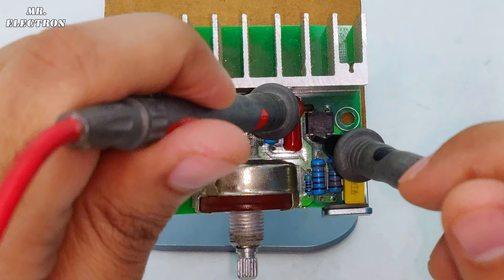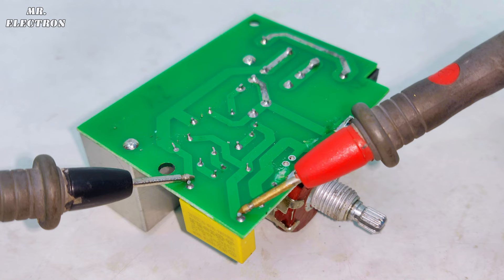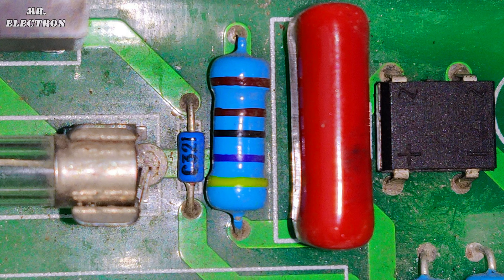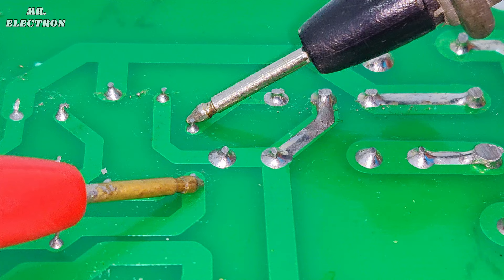Let's do the continuity check on these two capacitors now. Starting with the yellow one. It's fine. The red one. Yeah, fine. Moving on to the small component C321 and I'm not sure what it is but let's do the continuity check. There is no beep. Seems like it is fine.